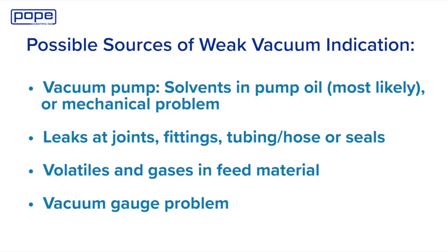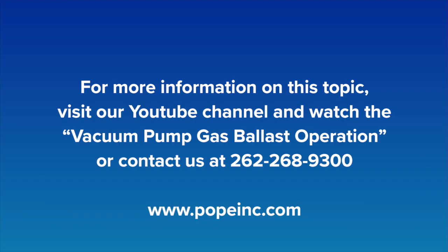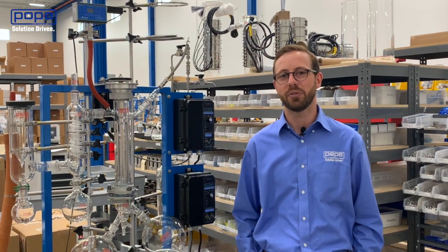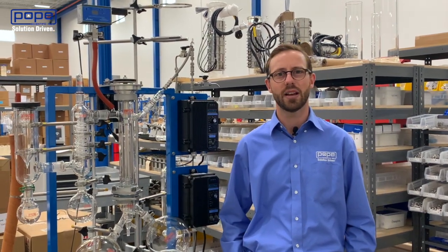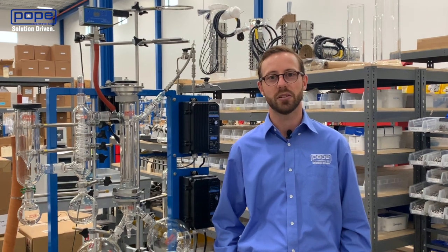There are several issues that can cause weak vacuum, such as problems with your vacuum pump or a leak at the joint, fitting, or seal. The inability to reach the rated ultimate vacuum with your vacuum pump may be a simple fix as we discuss in the linked video. Or you can contact Pope Scientific's team of technical experts for troubleshooting leaks. But what might be the case if your system is vacuum tight and you still have weak vacuum when you start to process your material?